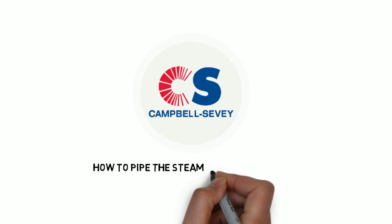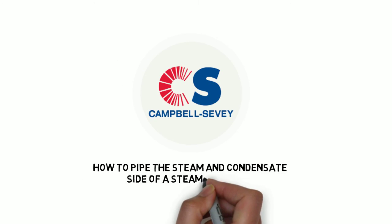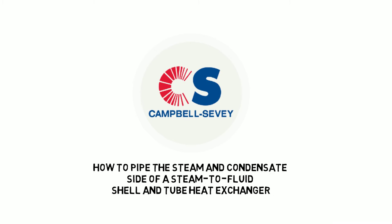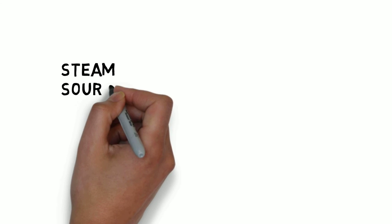How to pipe the steam and condensate side of a steam to fluid shell and tube heat exchanger. We start with a pressurized steam source.